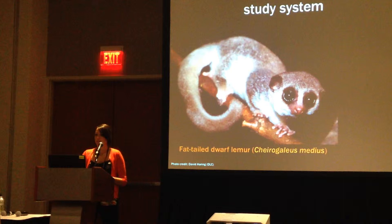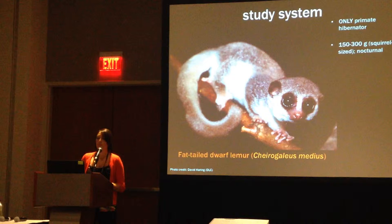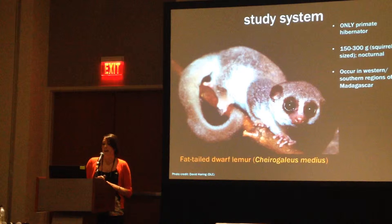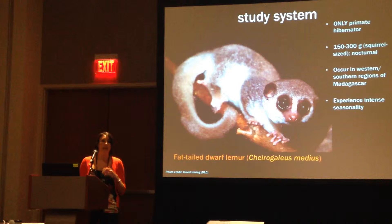My study system is the fat-tailed dwarf lemur, Cheirogaleus medius. They belong to a group that contains the only primate hibernators — the dwarf lemurs endemic to Madagascar. They're about 150 to 300 grams, roughly squirrel-sized, and nocturnal. They occur in western and southern regions of Madagascar, where they experience intense seasonality — virtually zero precipitation for up to eight months out of the year. Consequently, in the wild, these animals can hibernate for up to eight months out of the year.